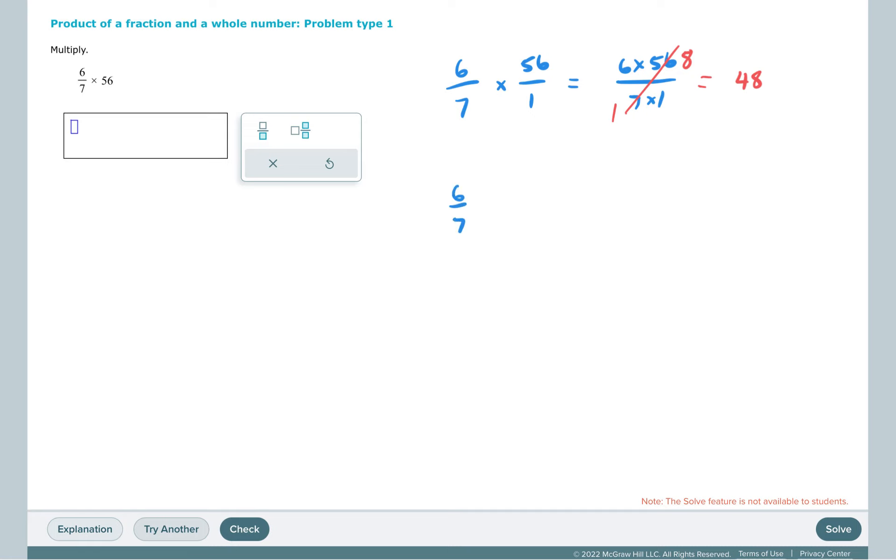We could also think of this as 6 sevenths of 56. 1 seventh of 56 is 8, so 6 sevenths would be 6 times 8, which is 48.